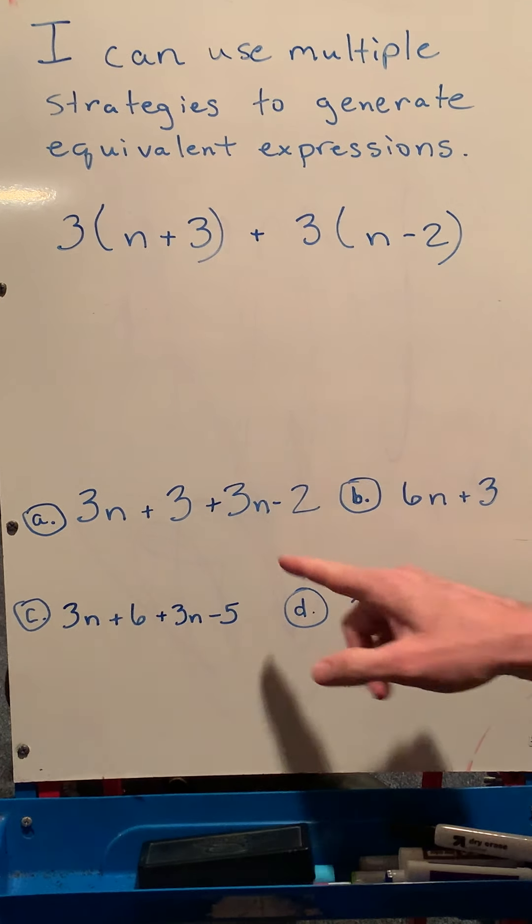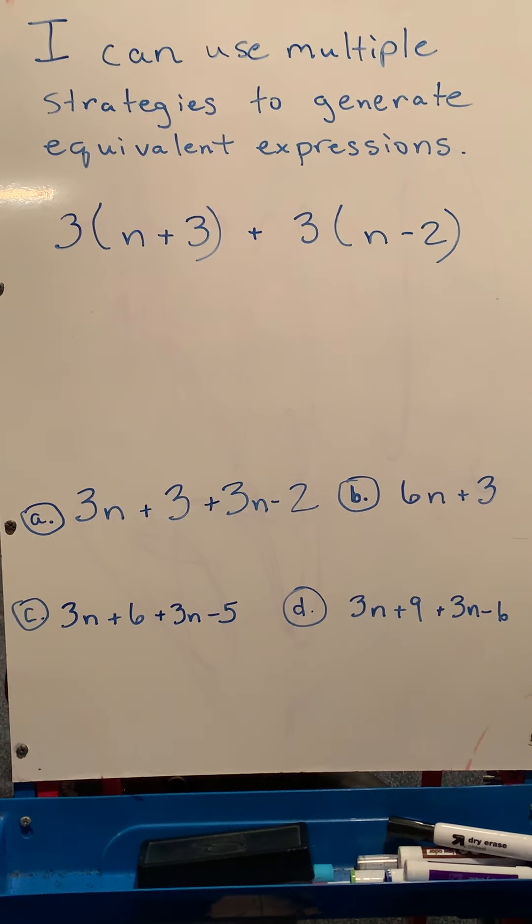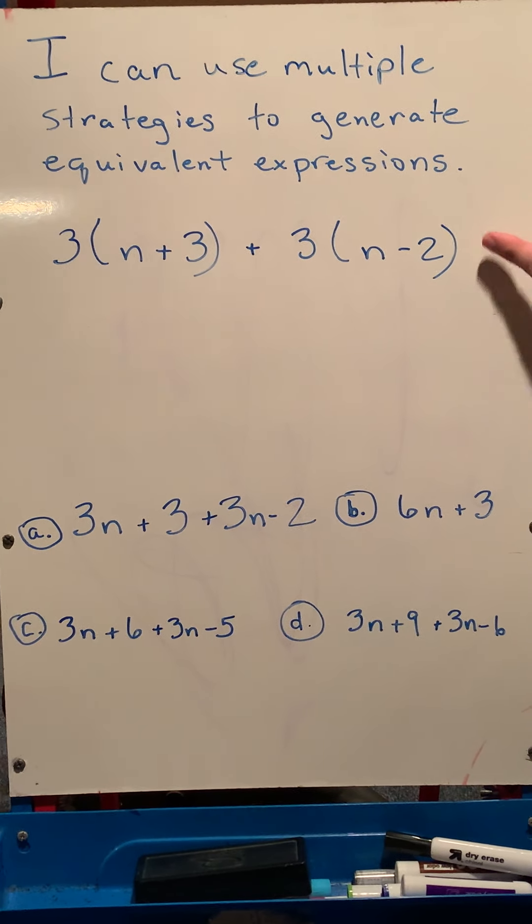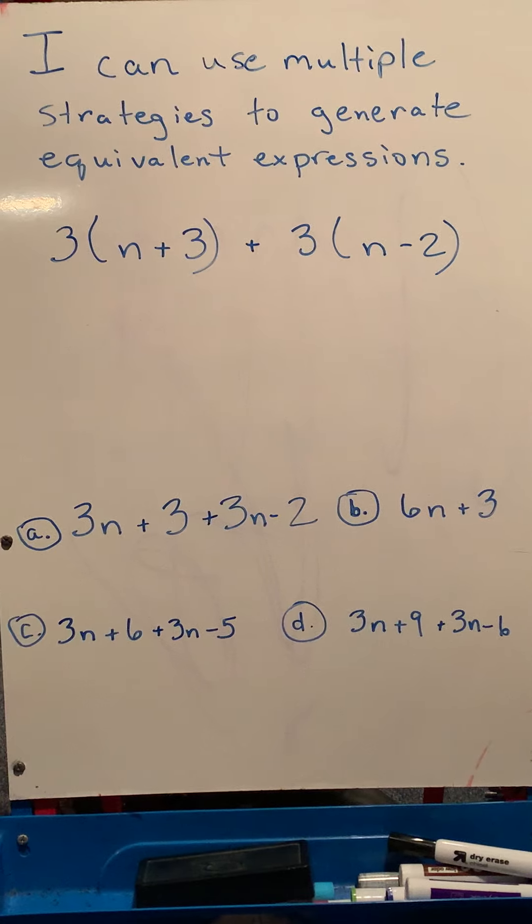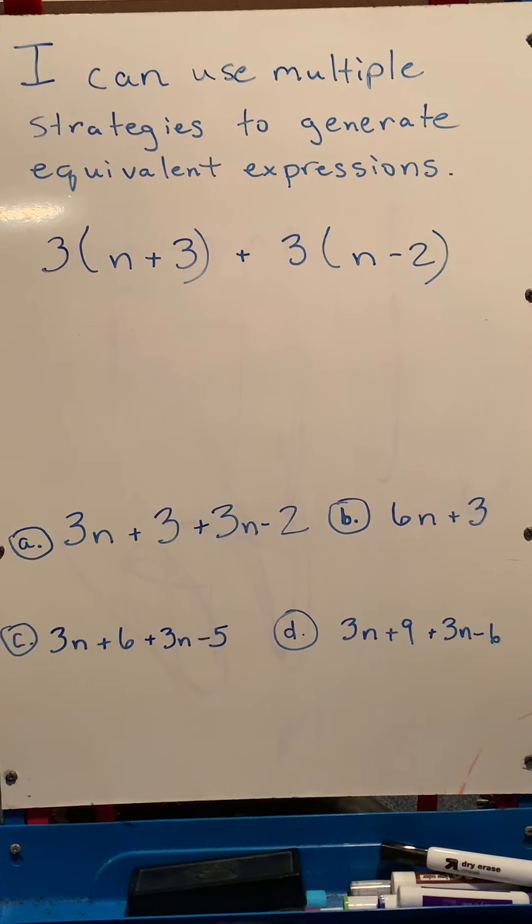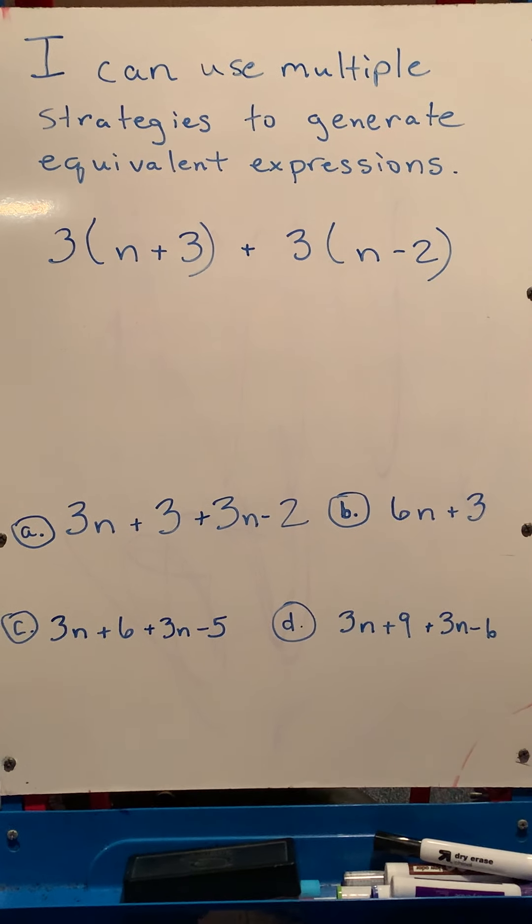So you can see on an example, there are four choices down here, A, B, C, and D. And we want to know which ones are equivalent to our problem up here. So let's start out by using our distributive property again and combining like terms and seeing how that helps us here.